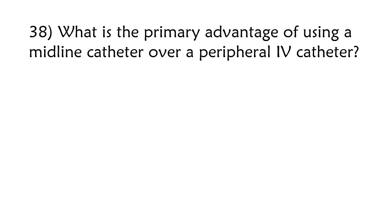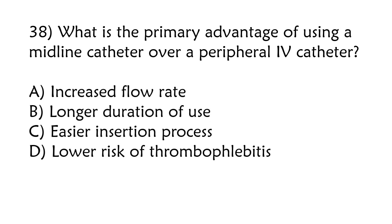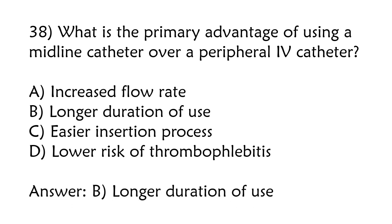What is the primary advantage of using a midline catheter over a peripheral IV catheter? Increased flow rate, Longer duration of use, Easier insertion process, Lower risk of thrombophlebitis. The correct answer is Option B: Longer duration of use.